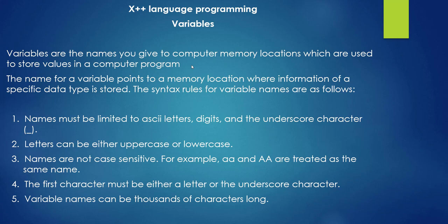Number four: the first character must be either a letter or an underscore character, which means you cannot start a variable name with a digit. Number five: the variable name can be thousands of characters long, so you can create a very long variable name if you want — or if you can remember it.